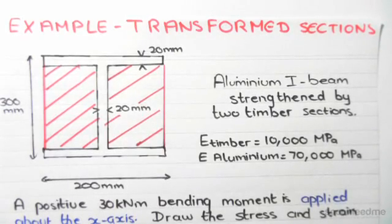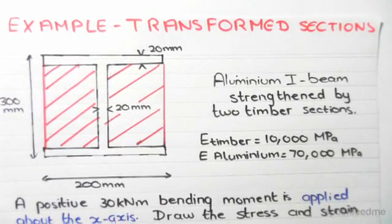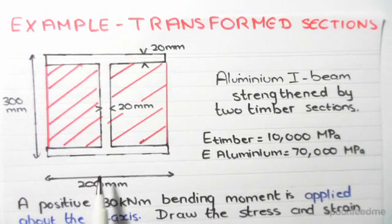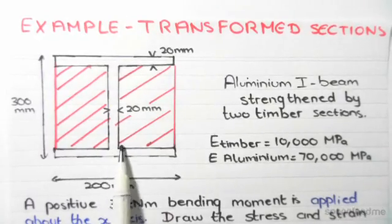The following example is on transformed sections and will be the final example for this topic. We have an aluminum I-section, the one in black, and it's strengthened by two timber plates, the ones in red.